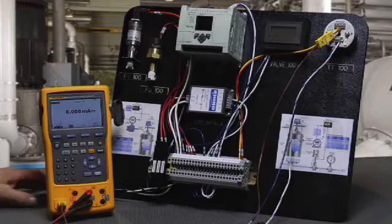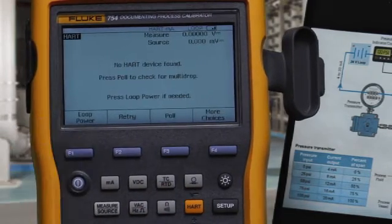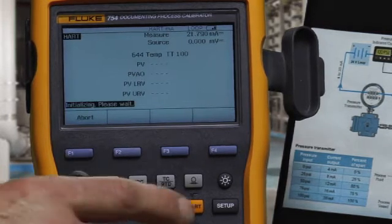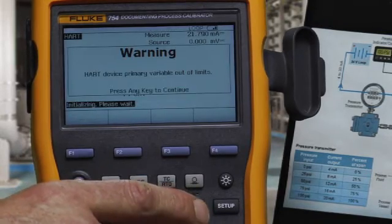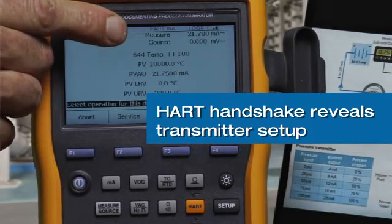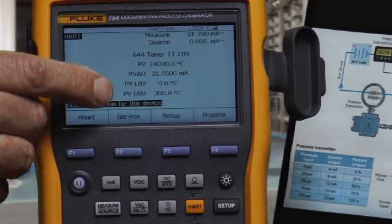To initiate the test, we would select HART and turn on loop power. In the initial handshake with the transmitter, we see the tag of the transmitter, its PV, and its input range.